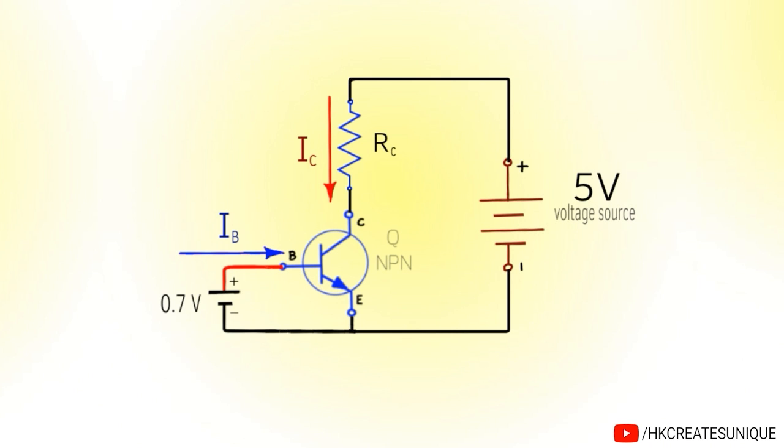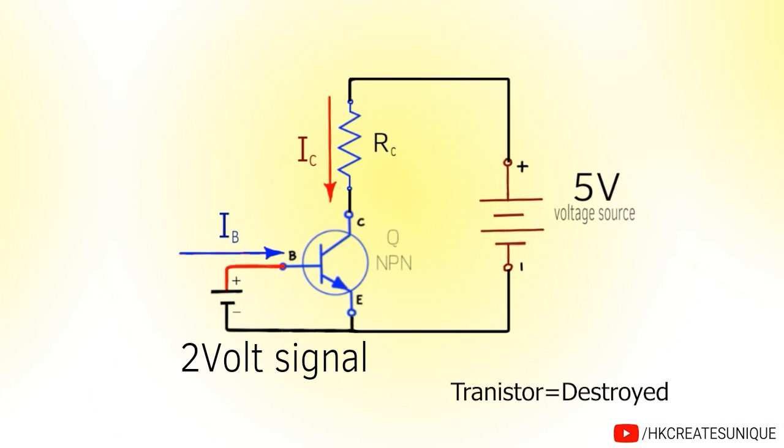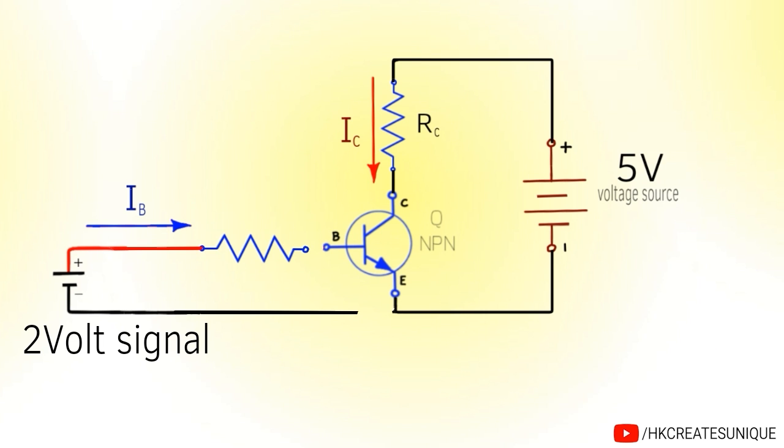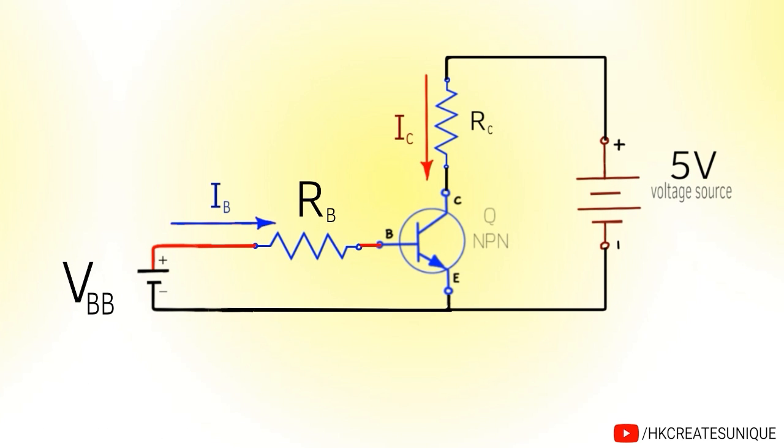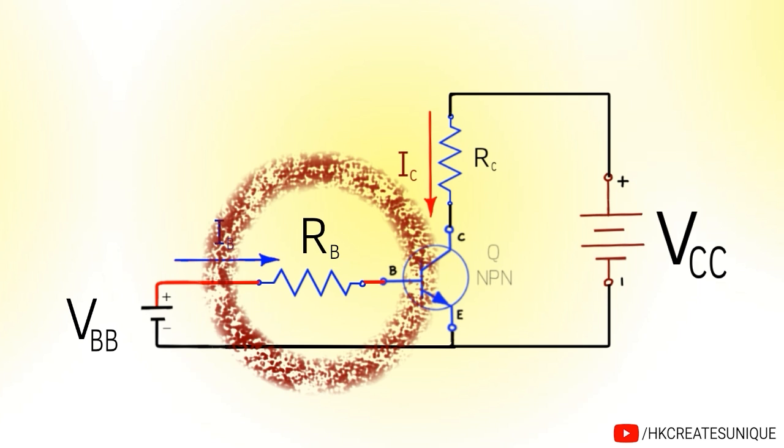But in most of the times, signal voltage you will be dealing with is above 0.7V. As an example, if 2V is coming from a sensor, you cannot directly apply it at the base to emitter terminal of the transistor. This voltage may destroy the transistor due to overcurrent. So we must connect a resistor in series to limit base current. Let's name the base resistor R subscript B. Also let's name the signal voltage as V subscript BB and the voltage source as V subscript CC. Now, the most important thing to find is the resistance RB.